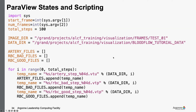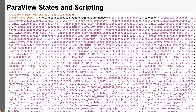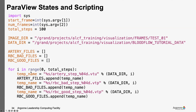If you go forward one slide, you'll see that the readers are defined in the script file with a list of all those time steps — a hundred of them. It has the full path and all hundred time steps for each of the three datasets. To clean that up, I'm going to loop through and create a list of files. I have the artery files, the RBC bad, and RBC good, looping over however many steps I have and appending them to the list, creating a list of file names.